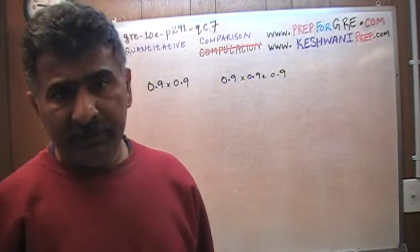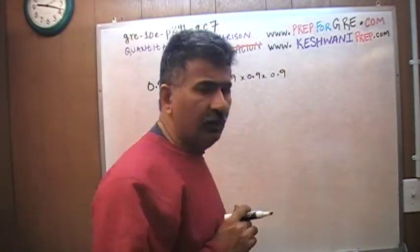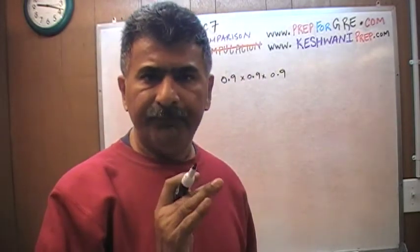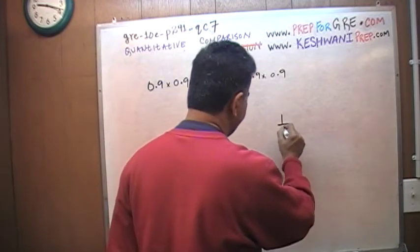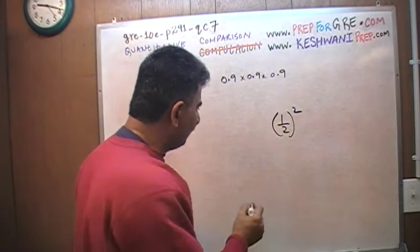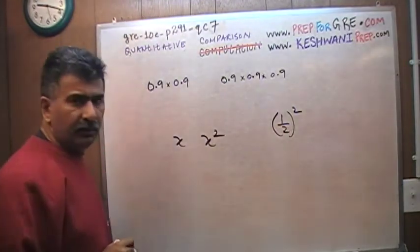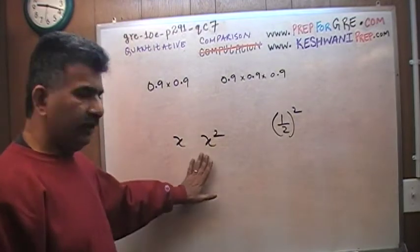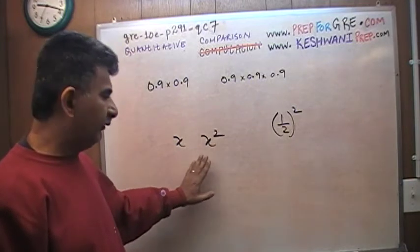The concept that they are testing here is a very simple concept, which is what happens when you square a fraction, a fraction between 0 and 1. For example, if you have a half and if you square it, traditionally if I ask you which quantity is bigger, x and x squared, the gut feeling of most people would be to immediately say that x squared has to be bigger than x. But that's not necessarily true. It depends on what x is.